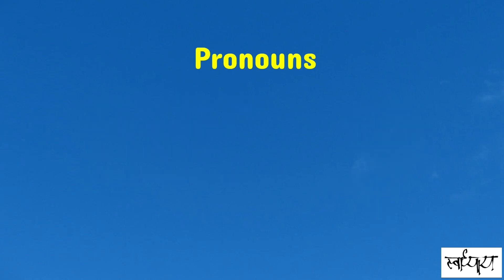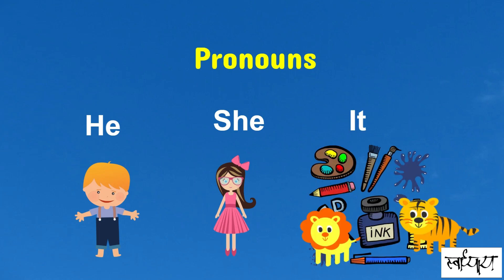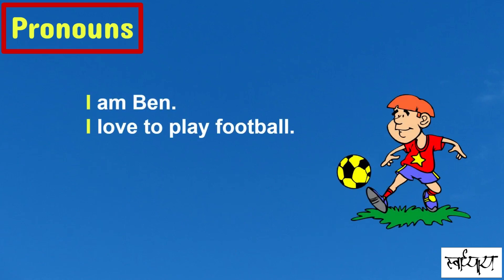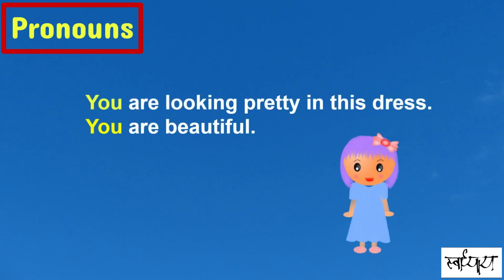Let's take a look at different pronouns. He is used to talk about a boy or a man. She is used to talk about a girl or a woman. It is used to talk about an animal or a thing. I am Ben. I love to play football. 'I' is a pronoun that is used to talk about yourself. You are looking pretty in this dress. You are beautiful. 'You' is used for the person or persons you are talking to. Here 'you' is a pronoun.